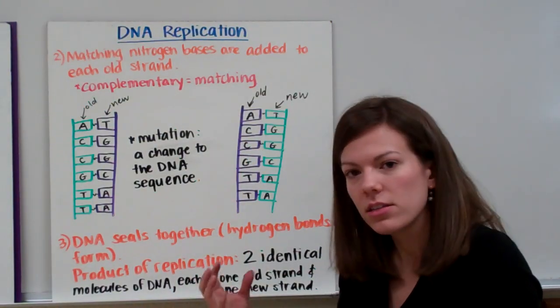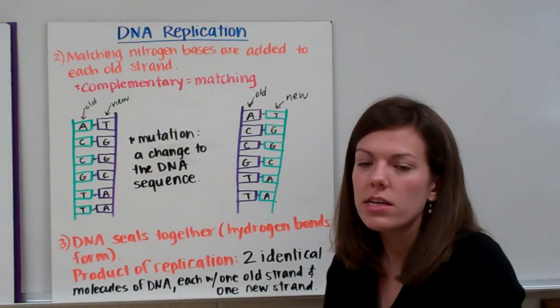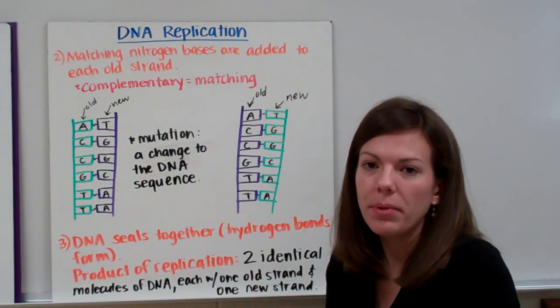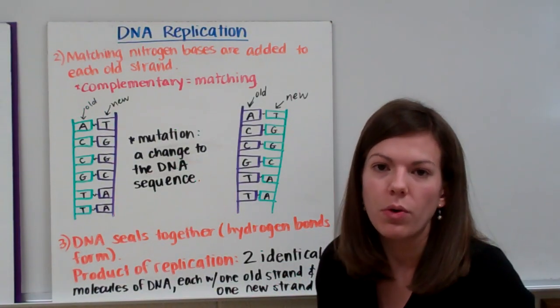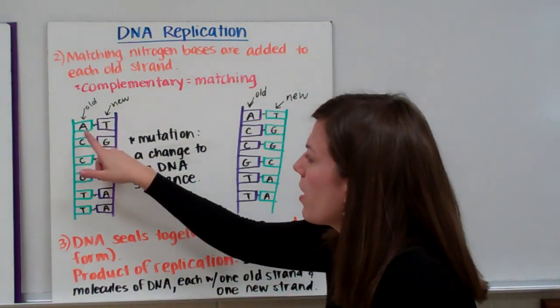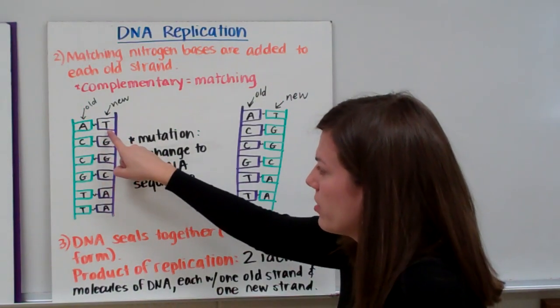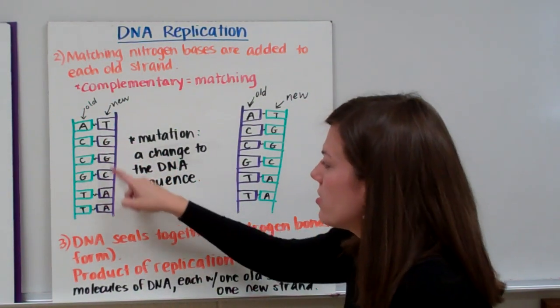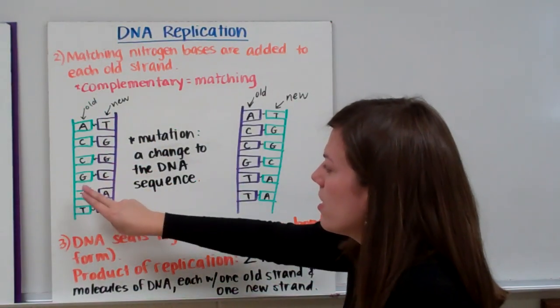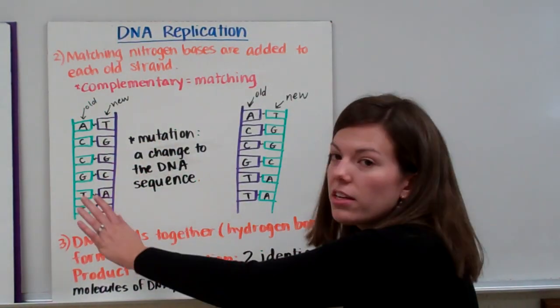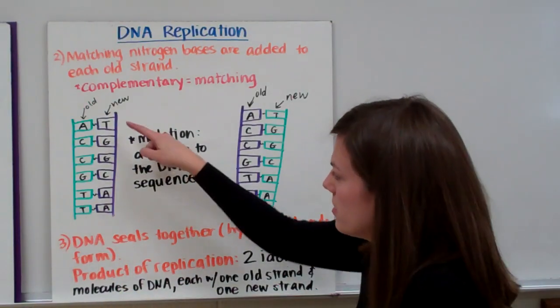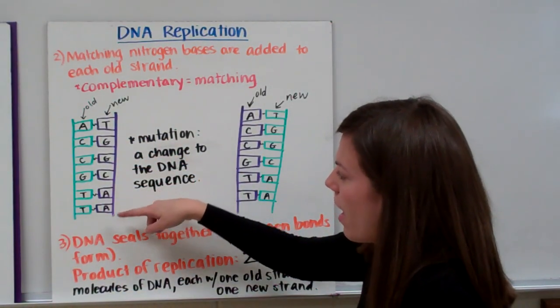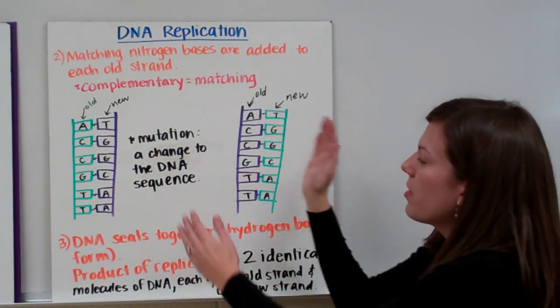Remember we said A binds with T, and G binds with C. So A and T are said to be matching or complementary, and G and C are said to be matching or complementary. Wherever we have an A, we'll need to bring in another T. For C, we'd bring in another G, and so on. So we started with A, C, C, G, T, T on the left-hand side of our old strand. So we bring in a T, G, G, C, A, A. And then same with the other side.